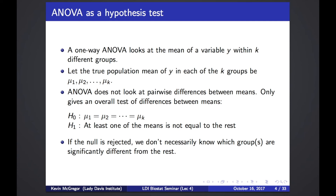Our alternative hypothesis is that at least one of the means is not equal to the rest. That could mean only one mean differs, two means differ, or all means are completely different from each other. We can't separate out these scenarios — all we're testing is whether they are all equal. So if we do reject our null hypothesis, we don't know which groups in particular are significantly different from the rest.